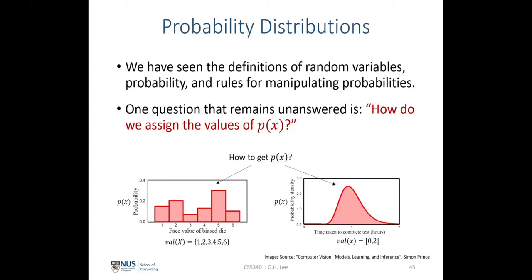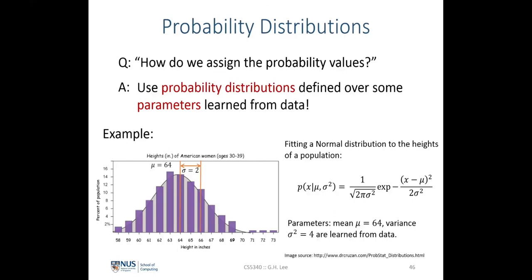This can be easily done over some parameters learned from data. What this means is that we are going to parameterize — use some parameterized representation of the probability distribution, which we denote as P.